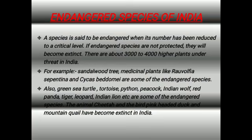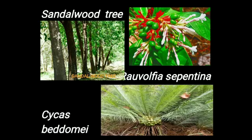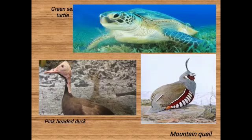Endangered species of India: a species is said to be endangered when its number has been reduced to a critical level. If endangered species are not protected, they will become extinct. There are about 3,000 to 4,000 higher plants under threat in India — for example, sandalwood tree and medicinal plants like Ravolfia serpentina and Psychus bedomi. Also endangered are green sea turtle, tortoise, python, peacock, Indian wolf, red panda, tiger, leopard, lion, etc. The cheetah and birds such as the pink-headed duck and mountain quail have become extinct in India. These are pictures of sandalwood tree, Ravolfia serpentina, Psychus bedomi, green sea turtle, mountain quail, and pink-headed duck.